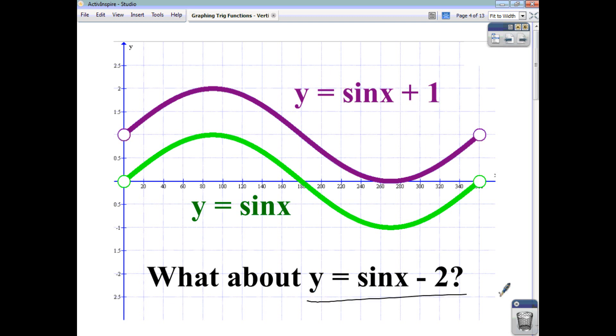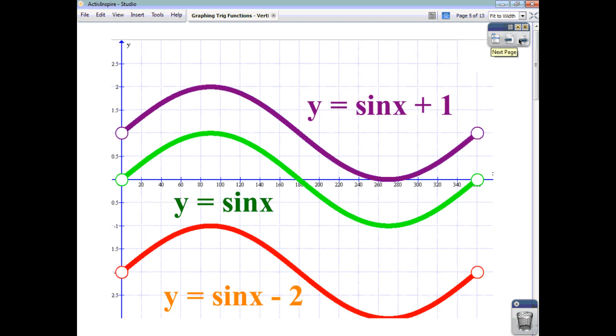Now what about y equals sine x minus 2? What happens then? If we use this green function y equals sine x as our starting point, the negative 2 is going to reduce every single value down by 2. So the whole thing moves down by 2 units. So you can see there how we started off with y equals sine x. Adding 1 gave us the purple one. Taking away 2 gave us the red one.